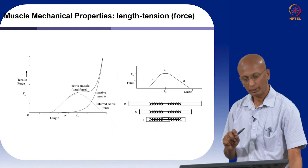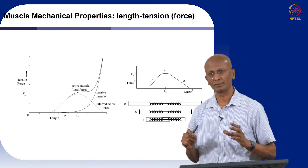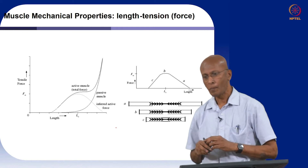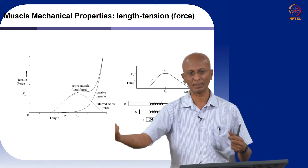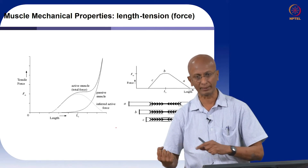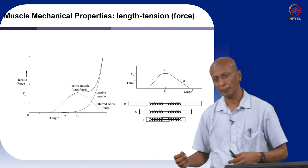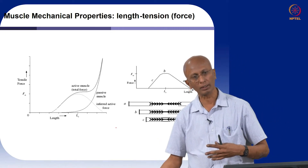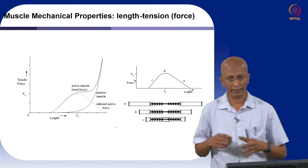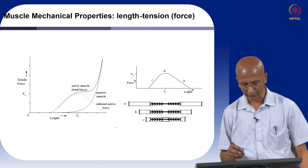A basic property of muscle is that the ability to produce force depends on the length of the muscle itself. If you want to produce a maximum amount of force when lifting something, the optimal elbow angle is approximately 90 degrees. If you try to lift something with your arm fully extended for a long time you will tire easily, because the capacity of a muscle to produce force at a longer length is less than at an intermediate length. Similarly, the capacity to produce force at a very short length is also less than at an intermediate length.